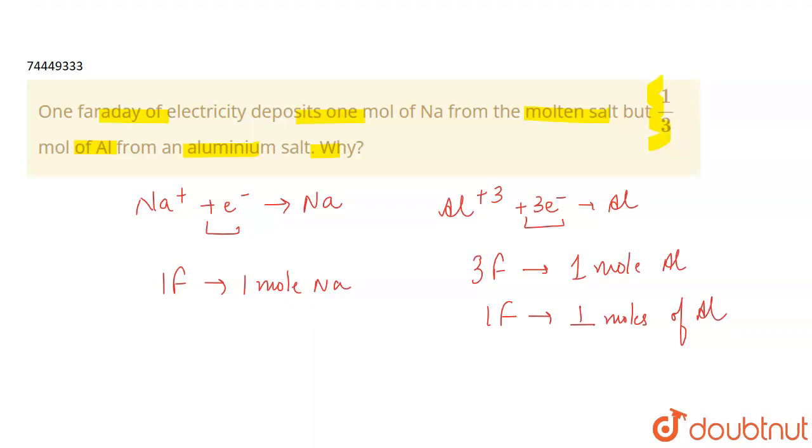So how many moles will be? One by three. So why is this happening? How many faraday of electricity is required? It depends, because aluminum plus 3 is going to gain three electrons.